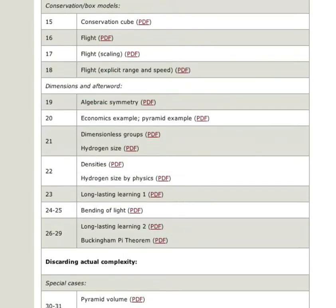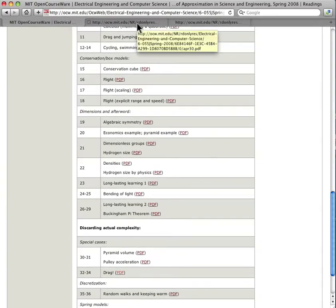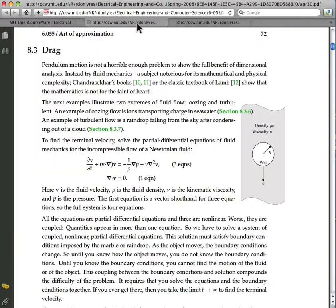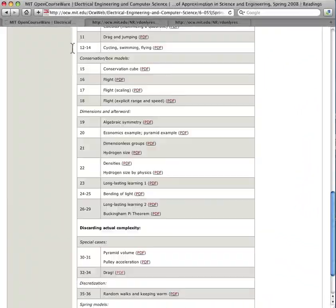In discarding information, Dr. Mohanjan analyzes the terminal velocity of ions moving in seawater and a raindrop falling from a cloud. These equations describing fluid flow can be daunting, but with special cases and dimensional analysis you will learn to find approximate solutions using simpler mathematics.